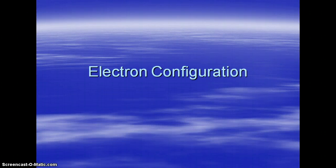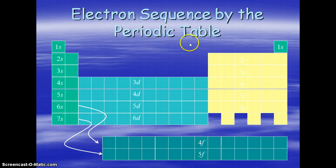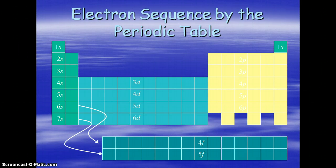In this podcast, we're going to talk about electron configuration. I want you to first understand that electron configuration is a sequence on the periodic table. We can read the periodic table like a book, starting up here at the top left and going across from left to right and then to the next line, and we can determine where all of the electrons are located for a particular element, but we need to understand what this actually means first.